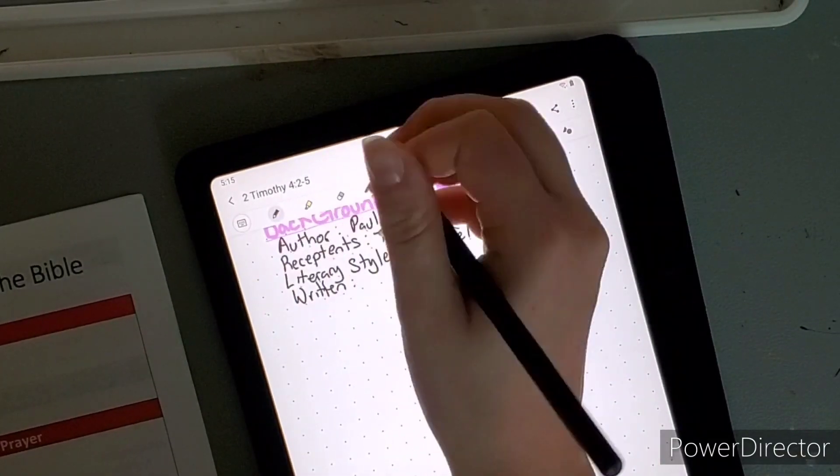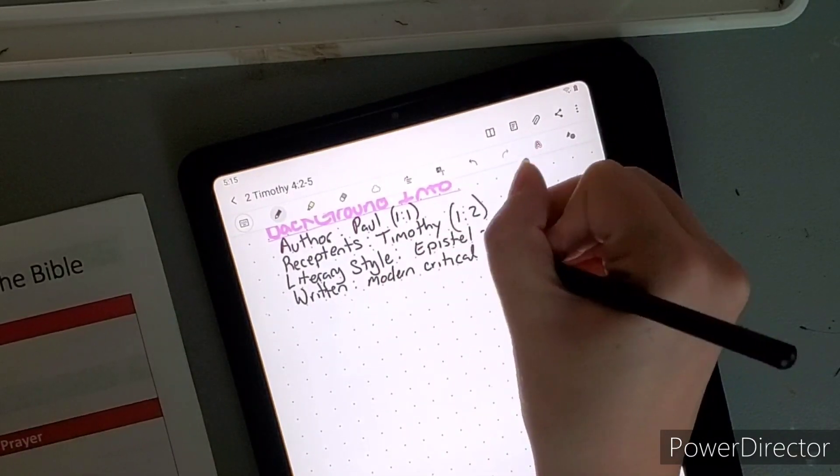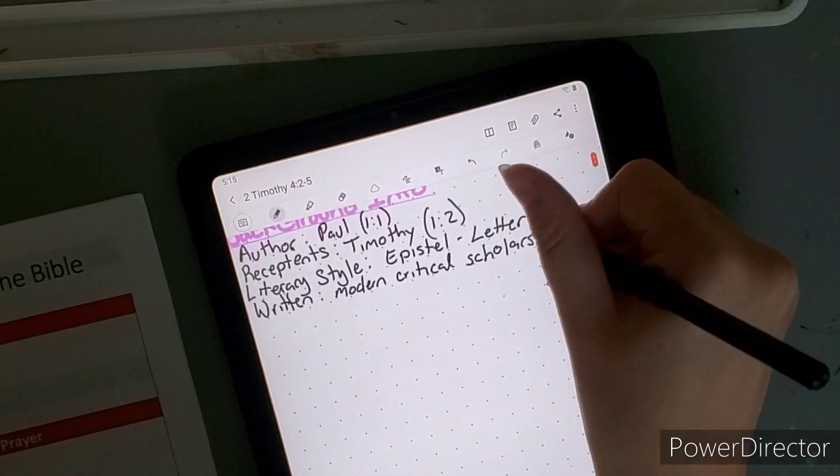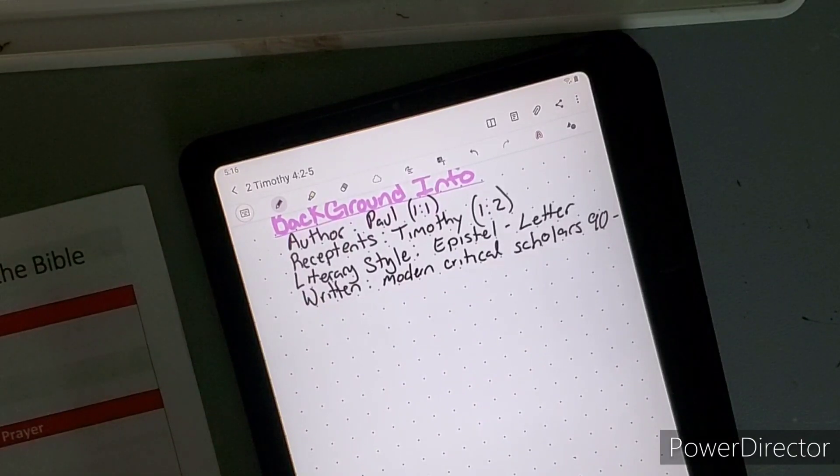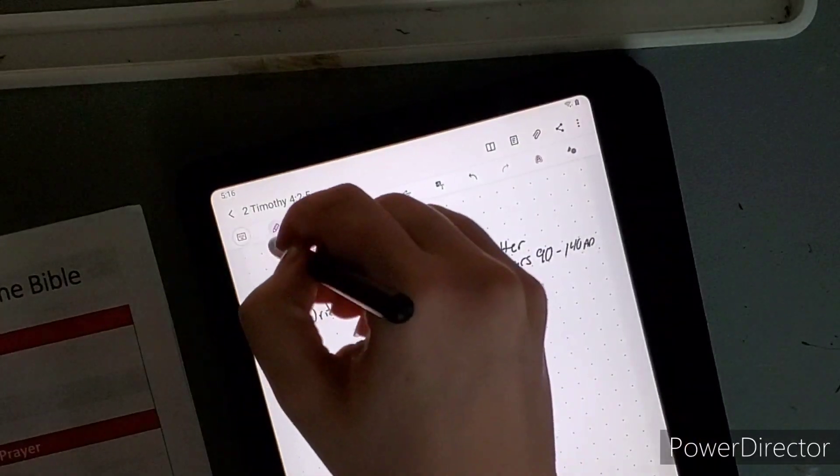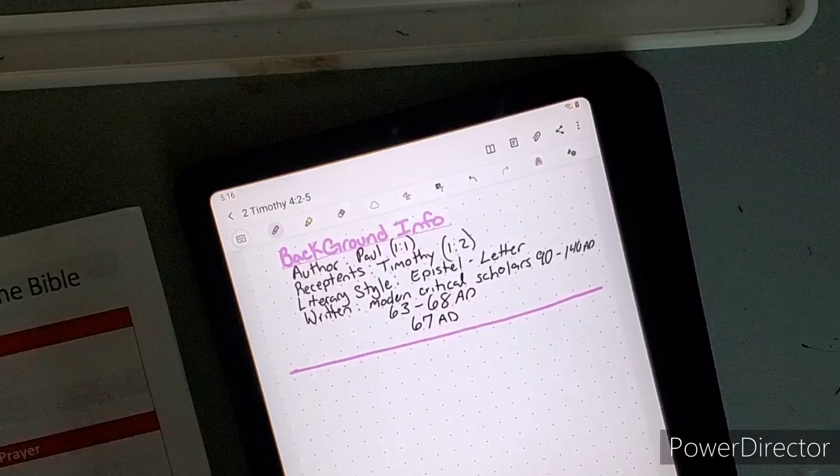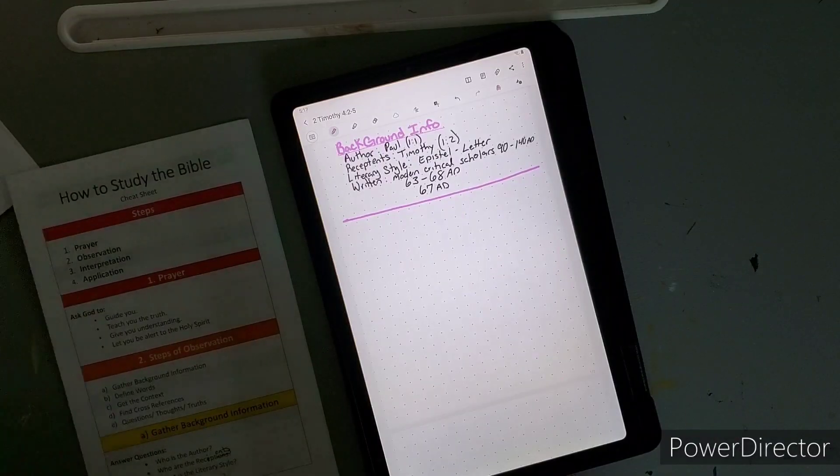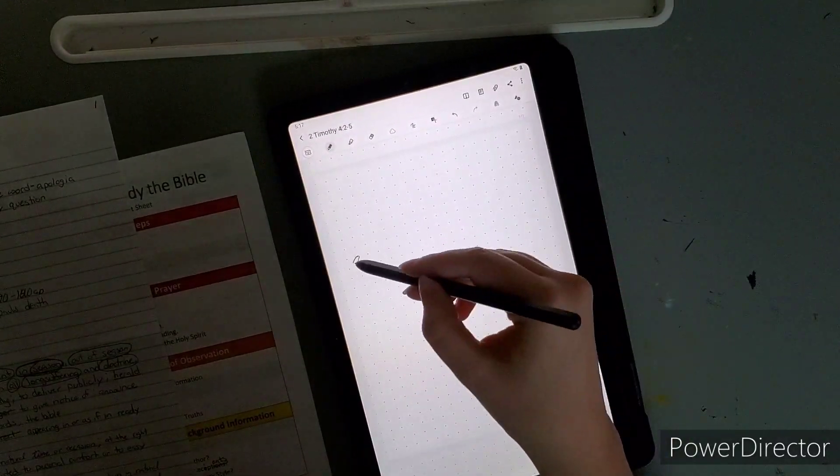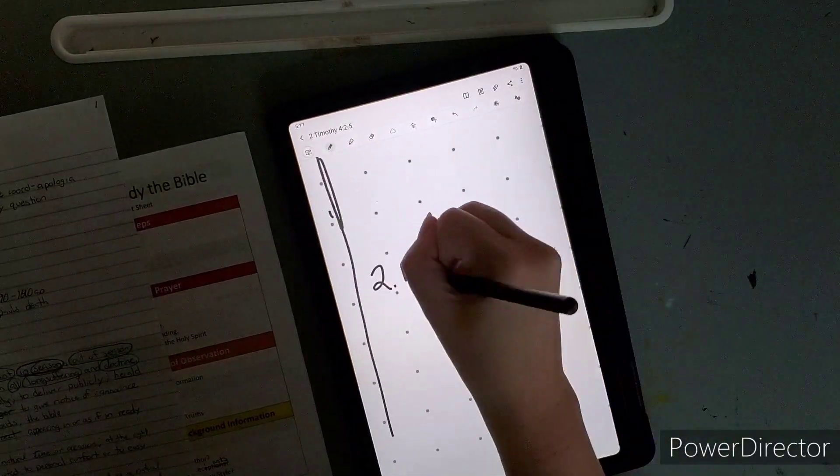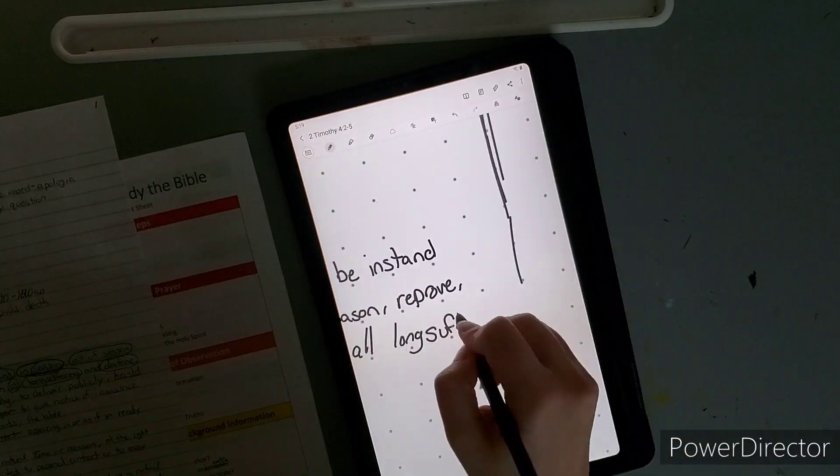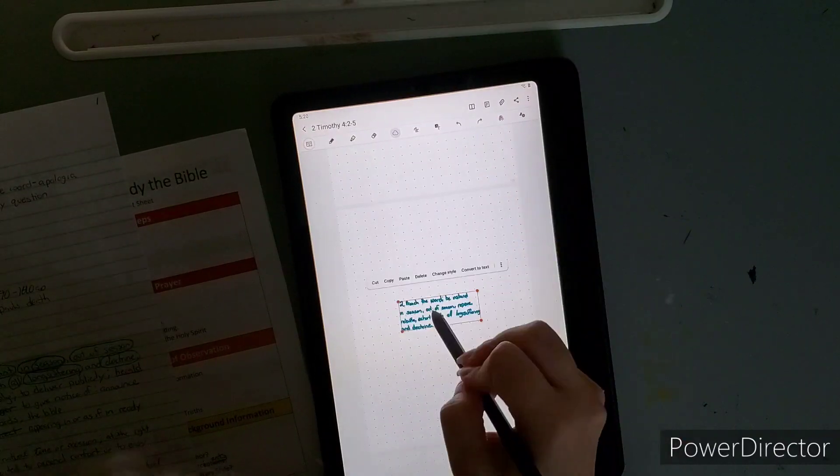Let's jump into 2 Timothy. Of course we're doing background. You can see on the left I have my How to Study the Bible cheat sheet. Link will be in the description. The author is Paul, recipient is Timothy. The literary style is an epistle, which is a letter basically, giving instruction. Modern critical scholars dated it from 90 to 140 AD, but most other references say 63 to 68 AD, most say 67 AD.